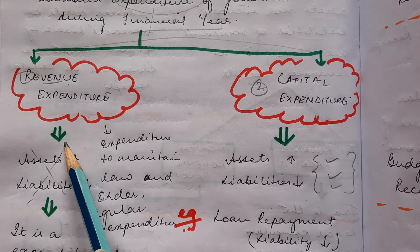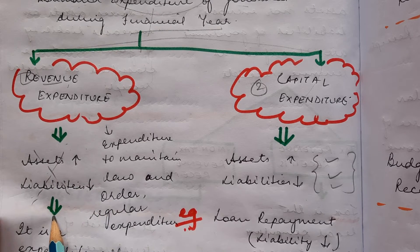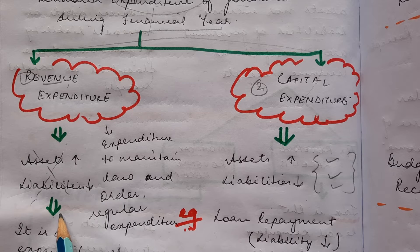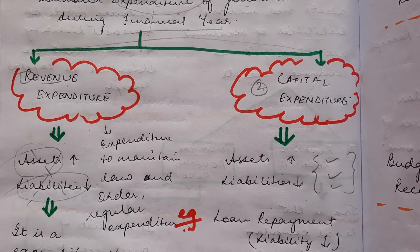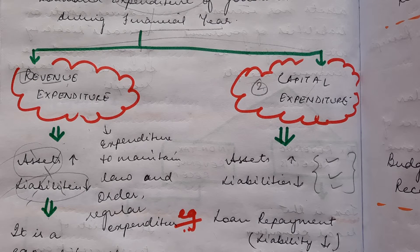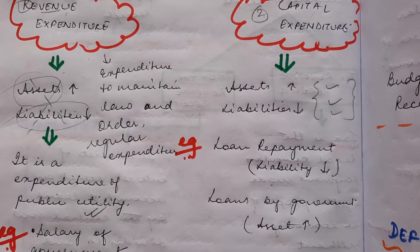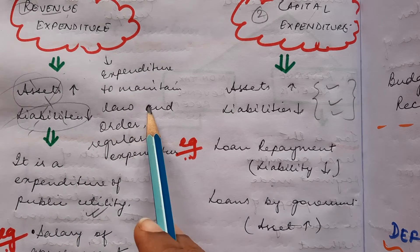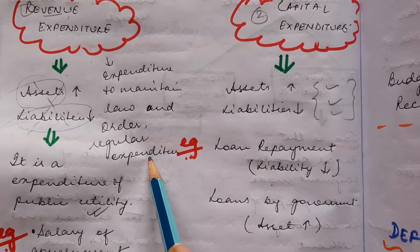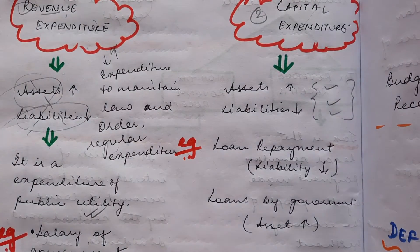Under revenue expenditure, there is no increase in assets and there is no decrease in liabilities. It is an expenditure of public utility — expenditure made by the government to maintain public services, like maintaining law and order. That is a regular expenditure the government has to make, and it comes under revenue expenditure.